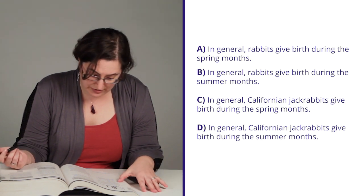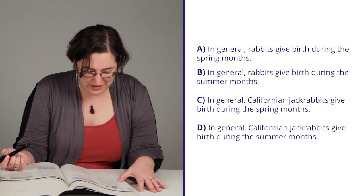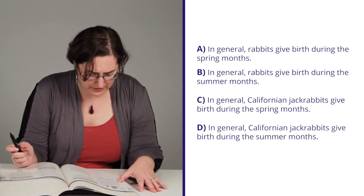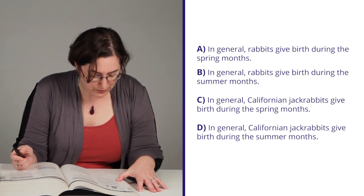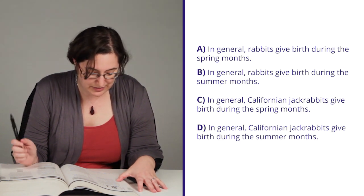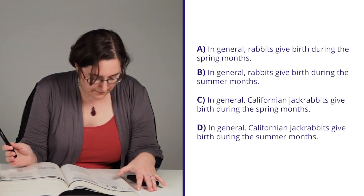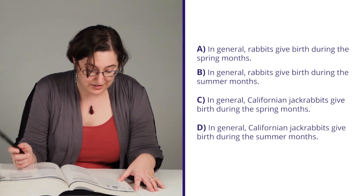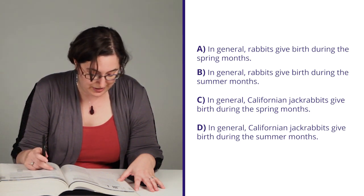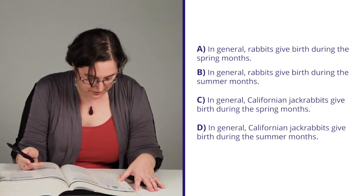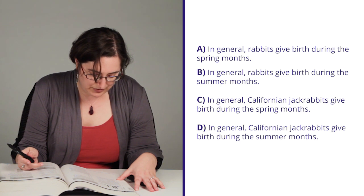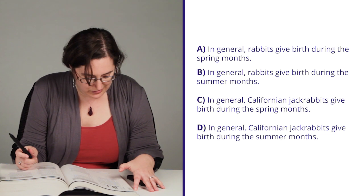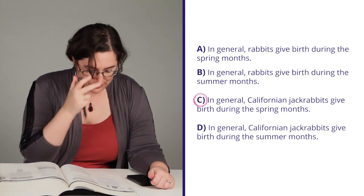In general, rabbits give birth during the spring months. That's kind of true, but then we've got that spike in August, so I'll keep going. In general, rabbits give birth during the summer months. That is definitely not the case because June and July are nowhere. In general, California jackrabbits give birth during the spring months. That's definitely an improvement over A because we're getting more specific. We're not talking about all rabbits everywhere. And then D is the same thing except with summer, which again, not enough babies born during the summer. So I'm going to go with C, giving birth during the spring months.